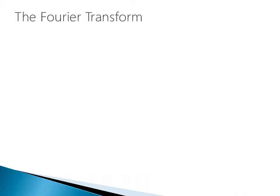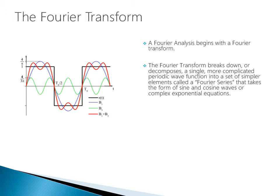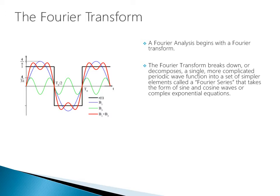A Fourier Analysis begins with a Fourier Transform. The Fourier Transform breaks down or decomposes a single more complicated periodic wave function into a set of simpler elements called a Fourier series, which takes the form of sine and cosine waves or complex exponential equations. These can be solved using simpler mathematics and superimposed to yield a solution to the original function via a linear combination. The decomposed elements in a Fourier series are sometimes referred to as harmonics.